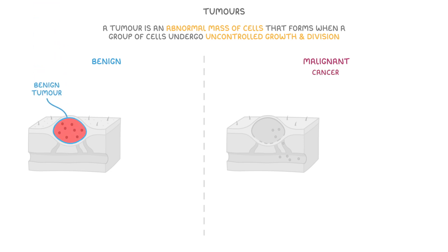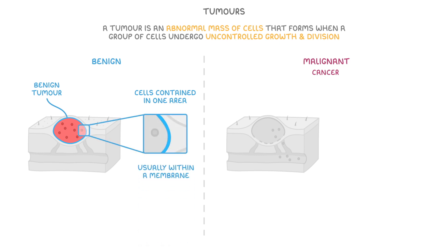In a benign tumour, the abnormal group of cells are contained within one area, usually within a membrane. Because they stay in that one place, they're not normally dangerous, so we don't call them cancer.